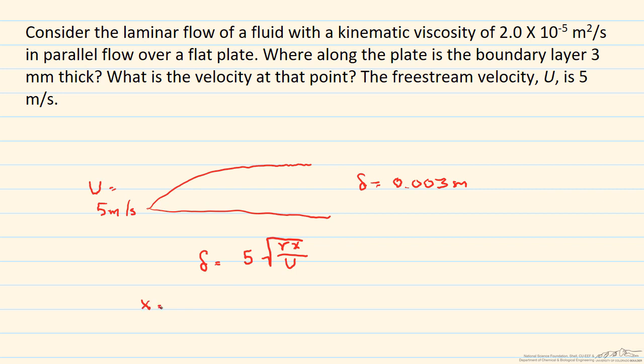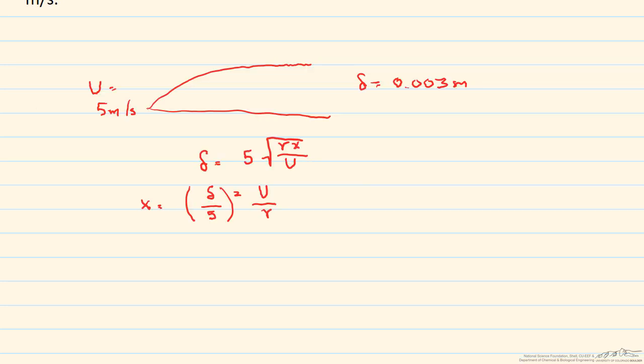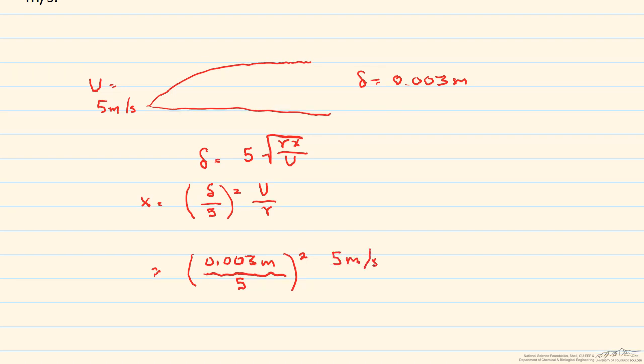So x is going to equal delta over 5 squared times U over the kinematic viscosity. Let's put our numbers in. That's 0.003 meters, the boundary layer thickness, divided by 5 squared, multiplied by 5 meters per second, the freestream velocity, divided by 2 times 10 to the minus 5 meters squared per second, the kinematic viscosity. So x equals 0.09 meters.